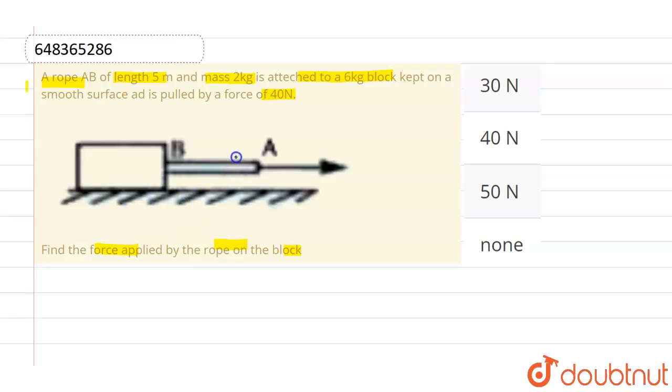This is a combined system because the force is applied on this end and the block is moving. This whole system must move with a common acceleration, let's suppose a.